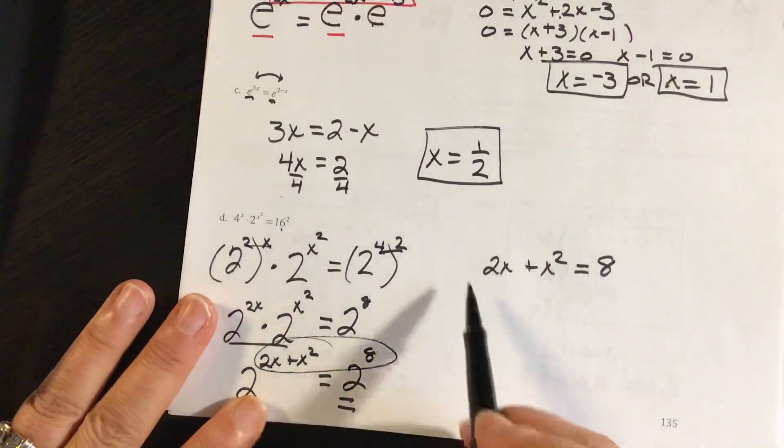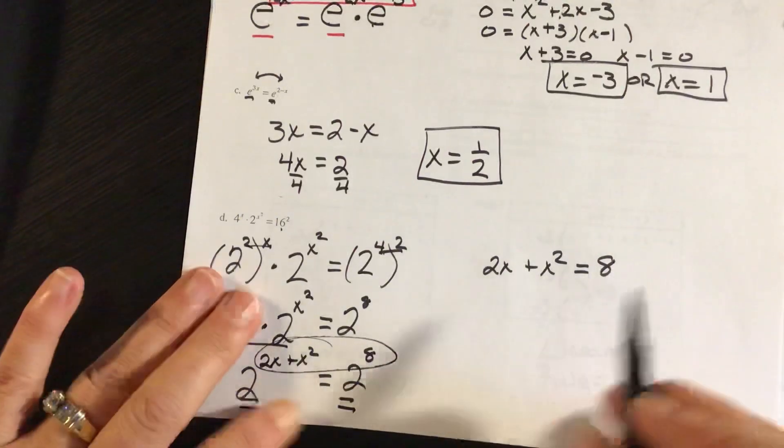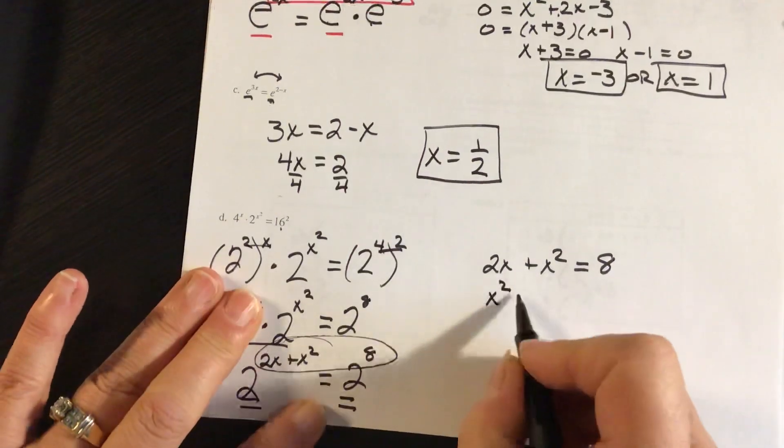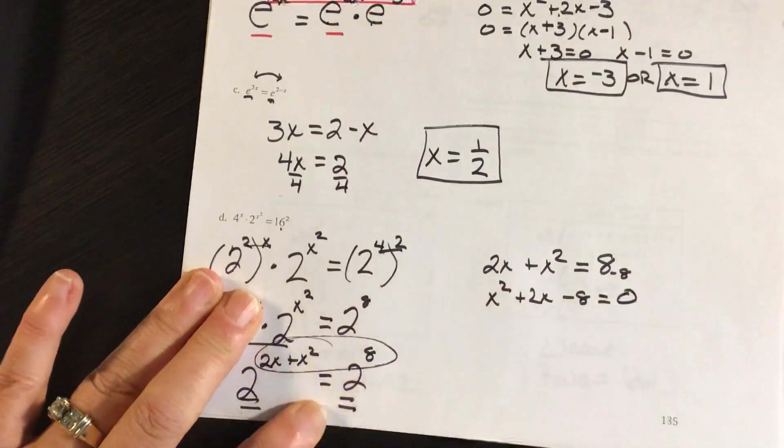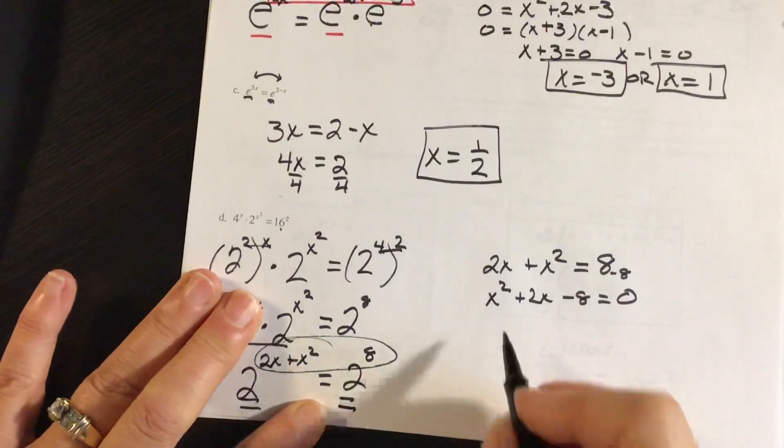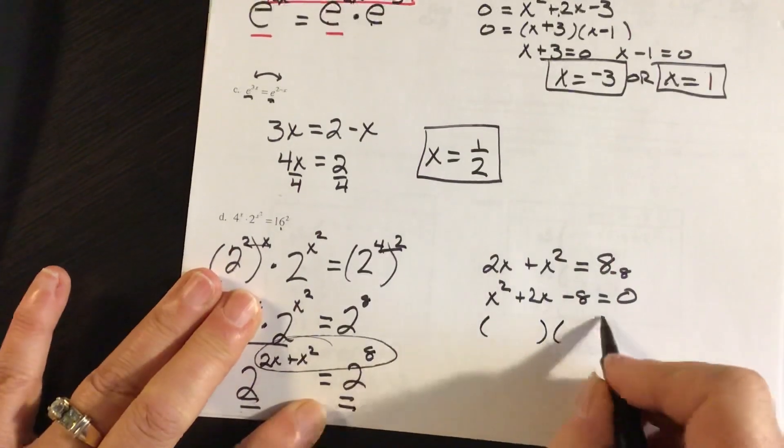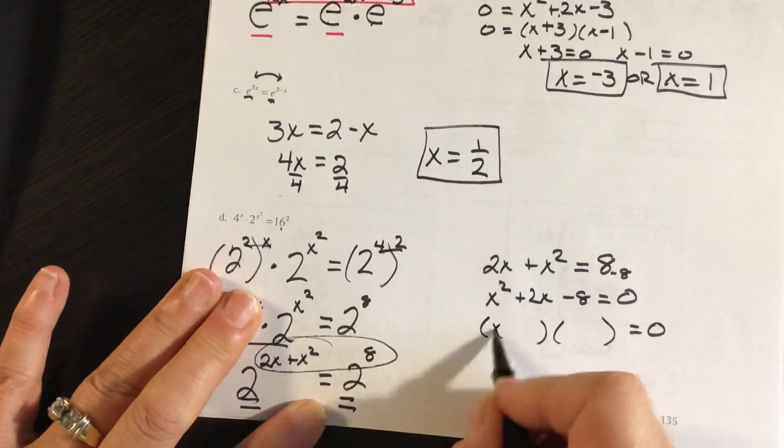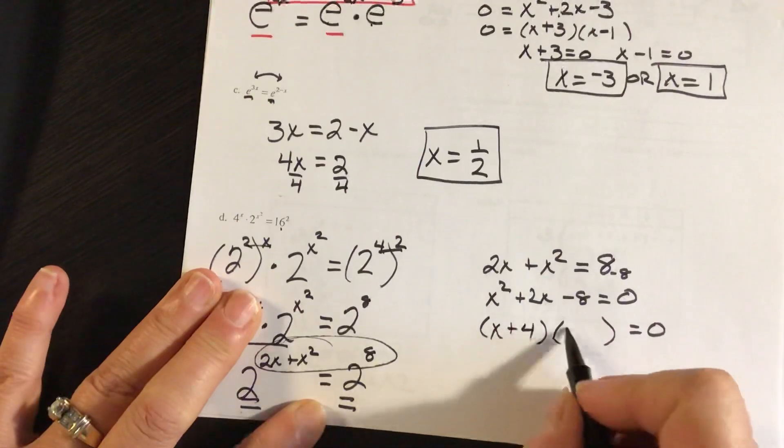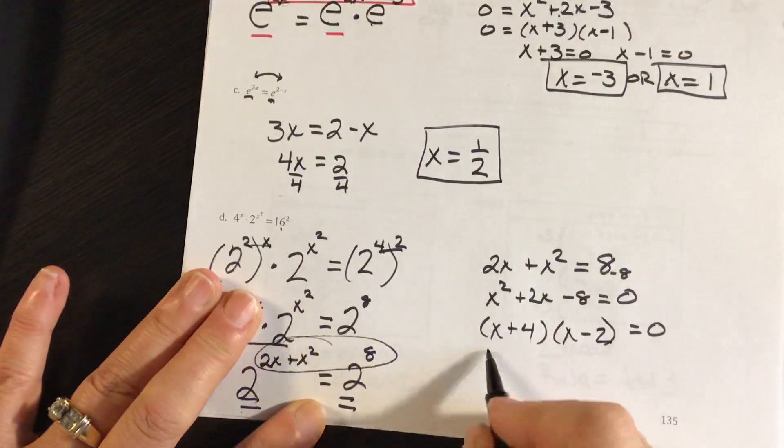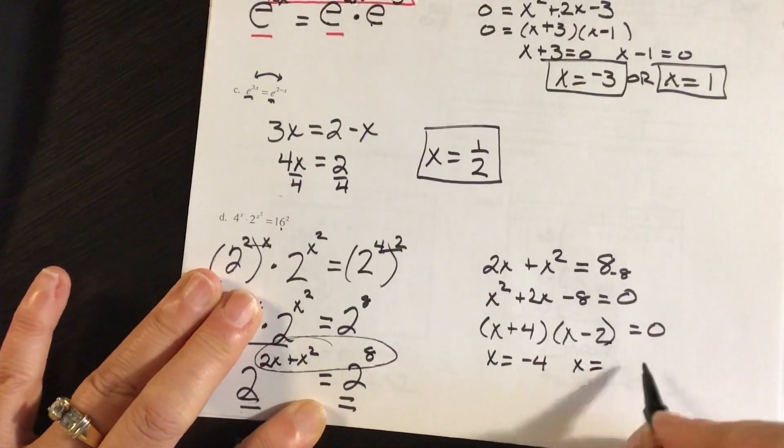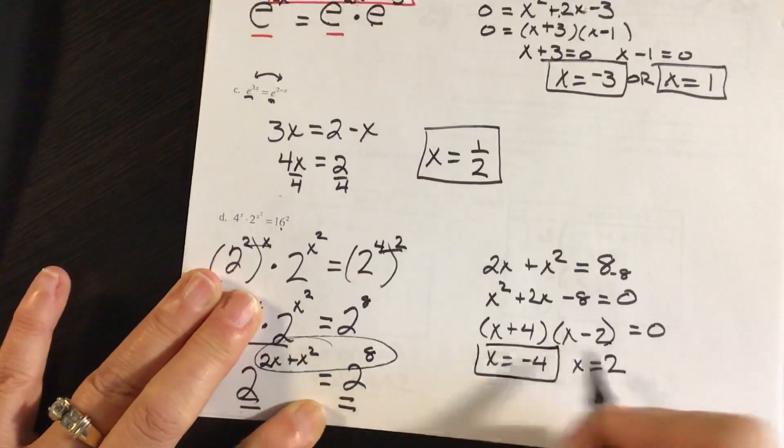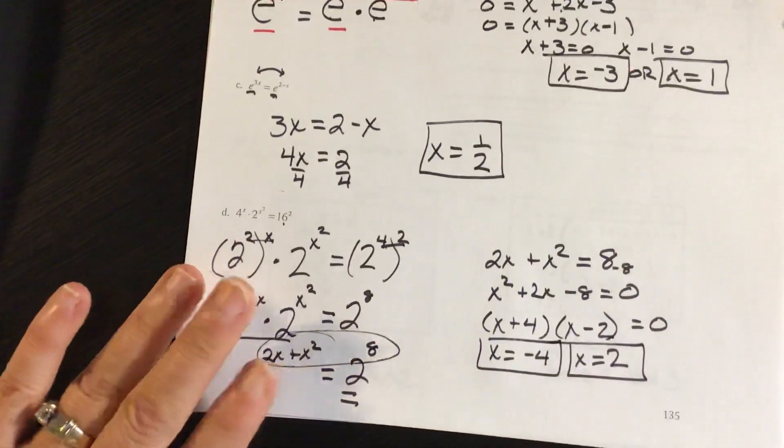And again, I'm going to have a quadratic equation. So I'm going to have x squared plus 2x minus 8. All I did was subtract the 8 on both sides to put it in standard form. Now I'm going to factor, and this would be x plus 4 and x minus 2. So x is negative 4 or x is 2. And those are my two solutions.